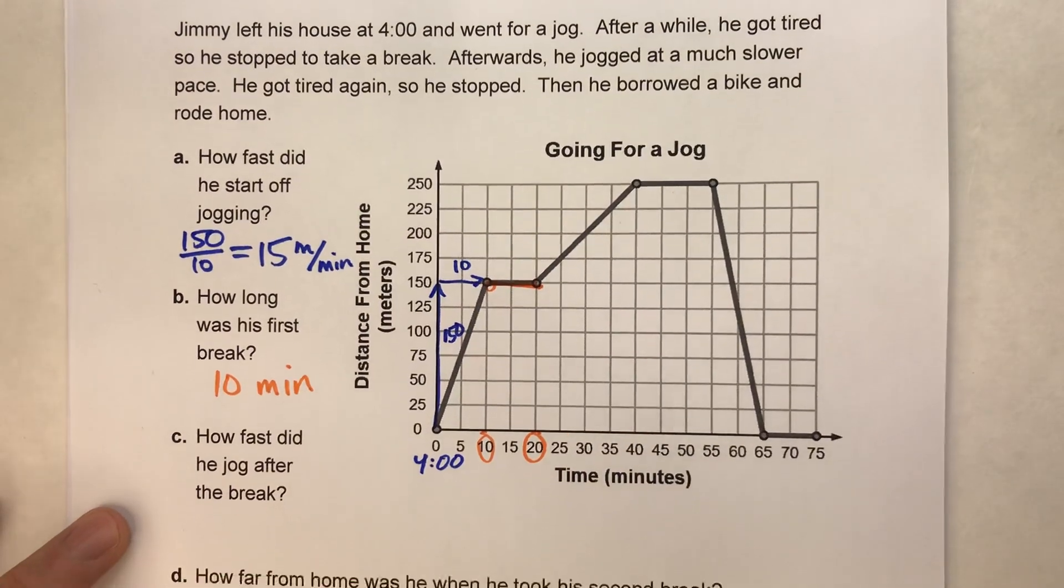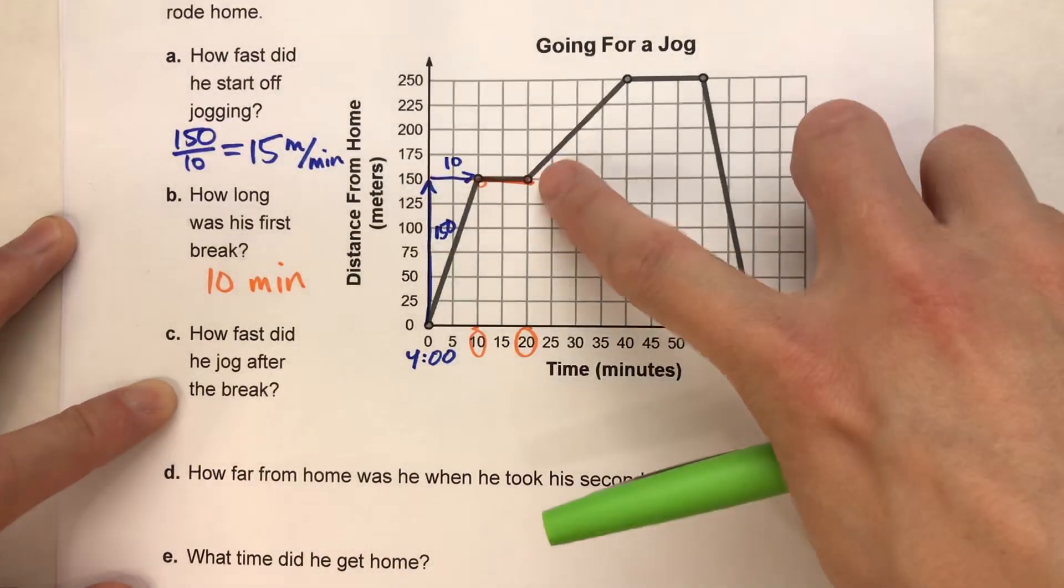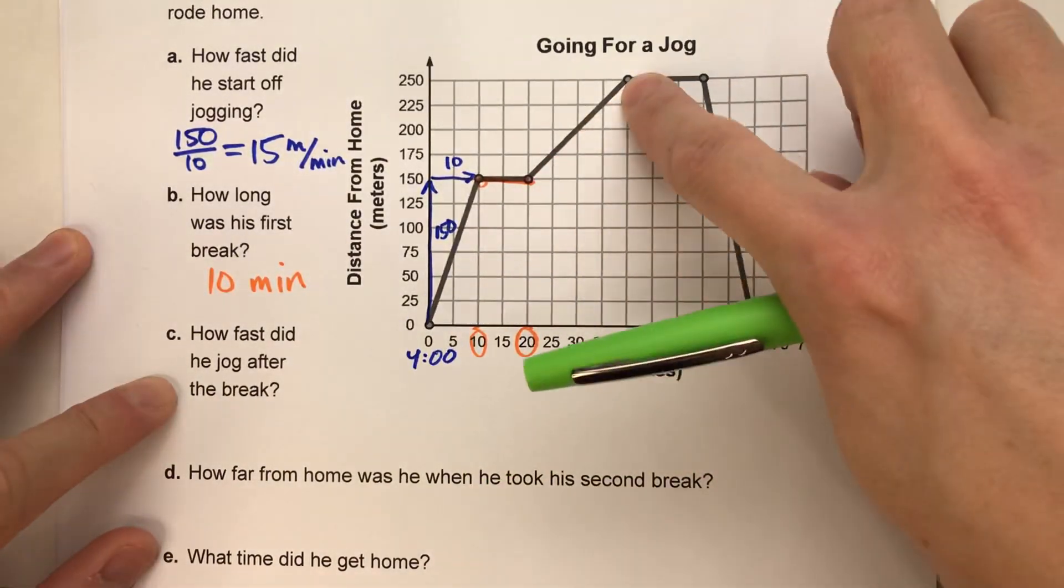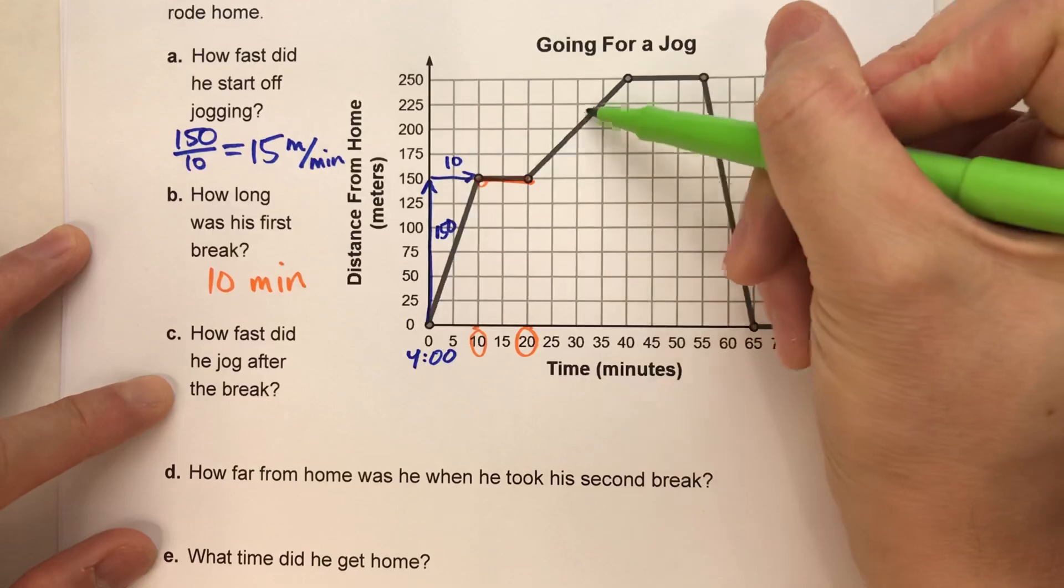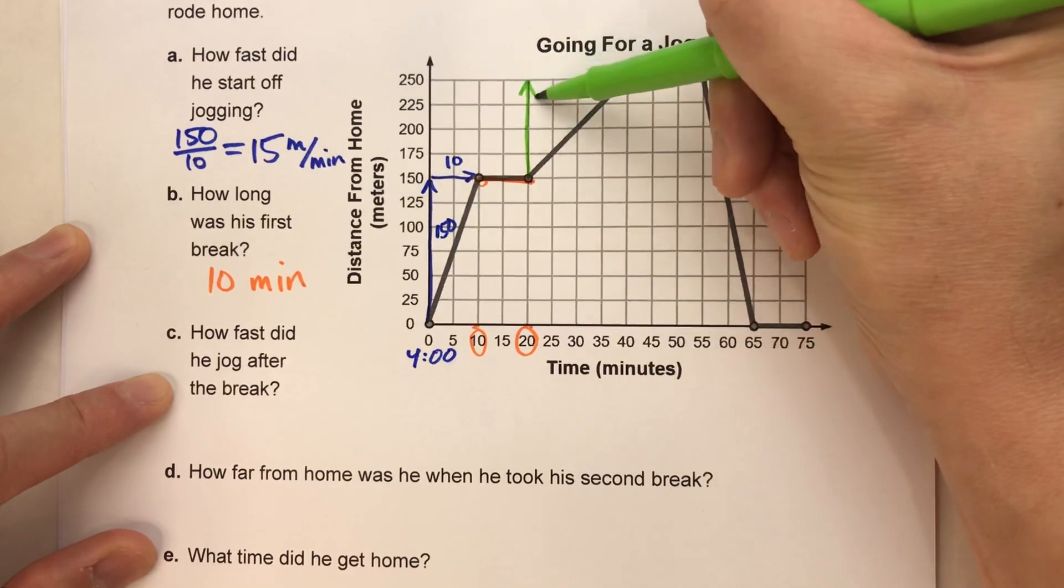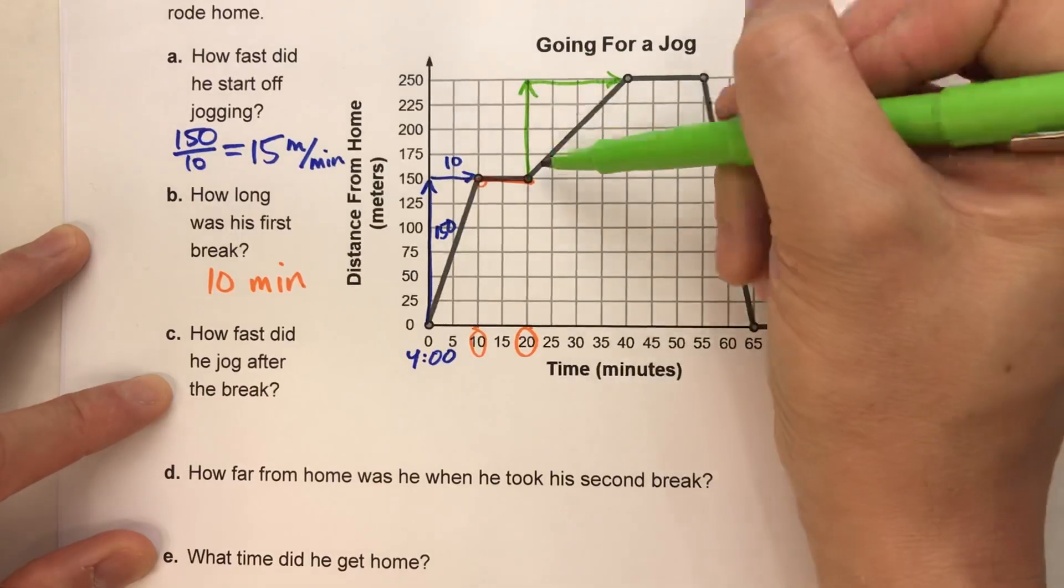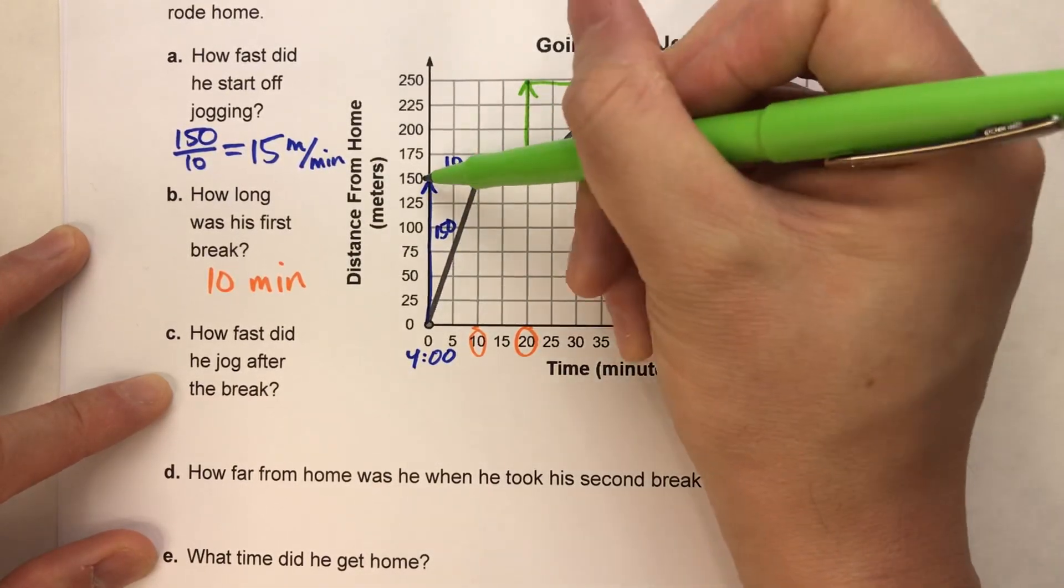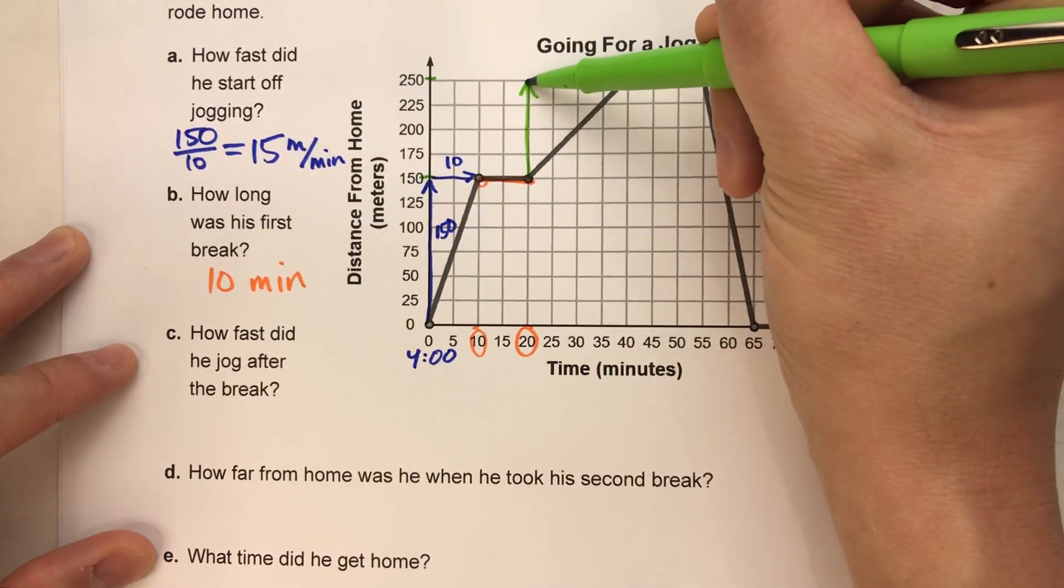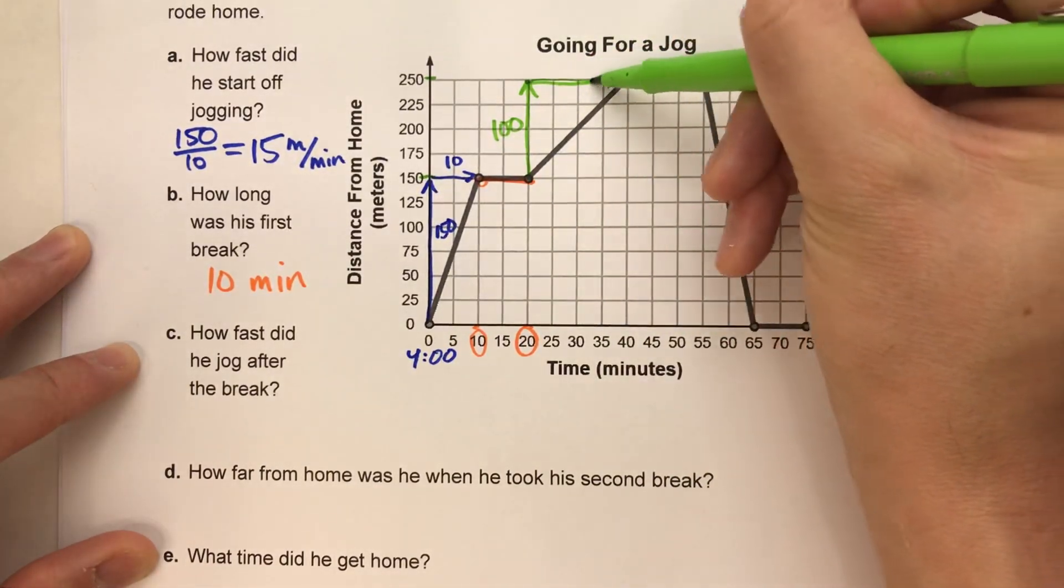Alright. Our next question then is, how fast did he jog after the break? Well, here's him jogging after the break. So if we want to know how fast that is, what we need to do is again, find the slope of this interval. Alright. So to do that, I need to find the rise and the run for this little section here. And notice for the rise, he started at 150. He ended at 250. So if he went from 150 to 250, that means he went 100 meters.